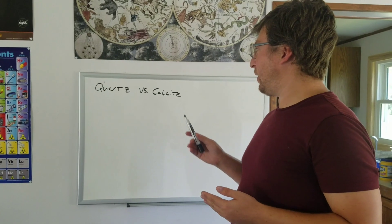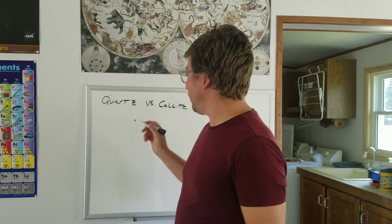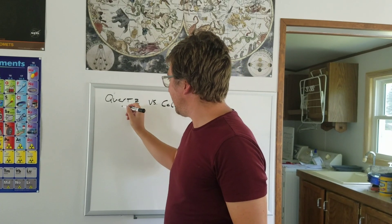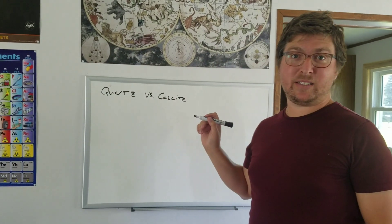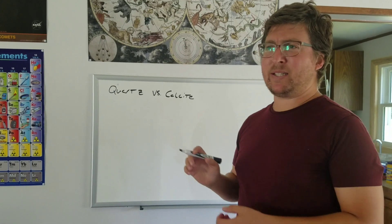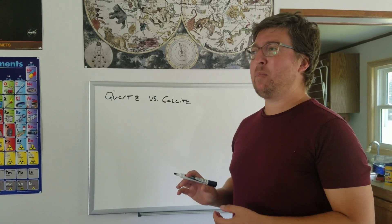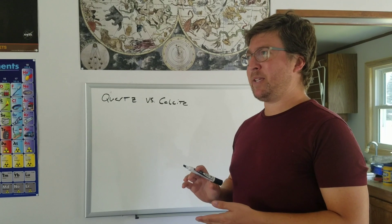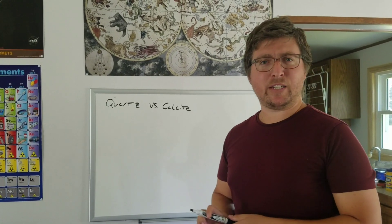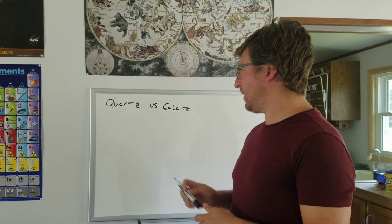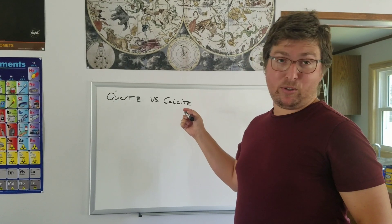First of all, there's a hardness test. Quartz will scratch glass, calcite will not scratch glass. So that's a real quick way — if you've got a piece of scrap glass, don't take it to your car window or anything obviously. But if you've got a piece of scrap glass or a glass beaker or something, it's real easy to do a hardness test. If it scratches glass, you're looking at quartz, and if it doesn't, you're probably looking at calcite.